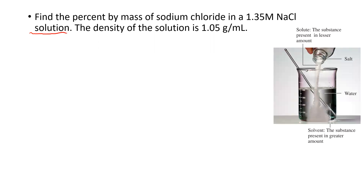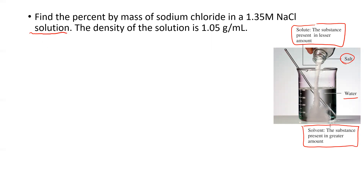A solution is when you dissolve something, and the most common thing you're dissolving into is water. In this example, I'm taking salt and putting it in water to dissolve it — so this is a solution. The salt is referred to as the solute, the thing being dissolved. More quantitatively, the solute is the lesser amount. The solvent is the medium doing the dissolving — the larger amount — and it surrounds the solute to make, in this case, salt water, which is a homogeneous mixture.